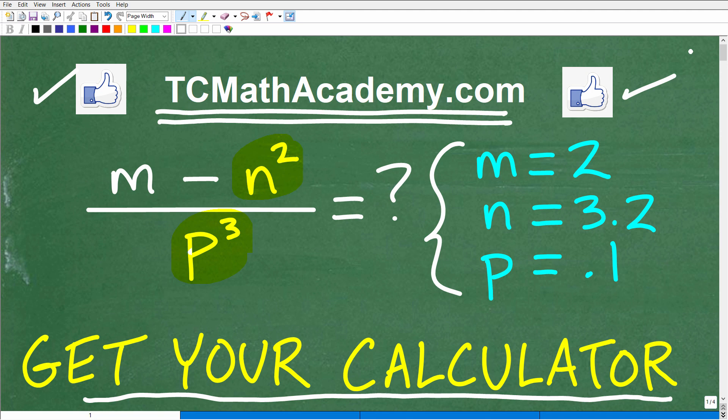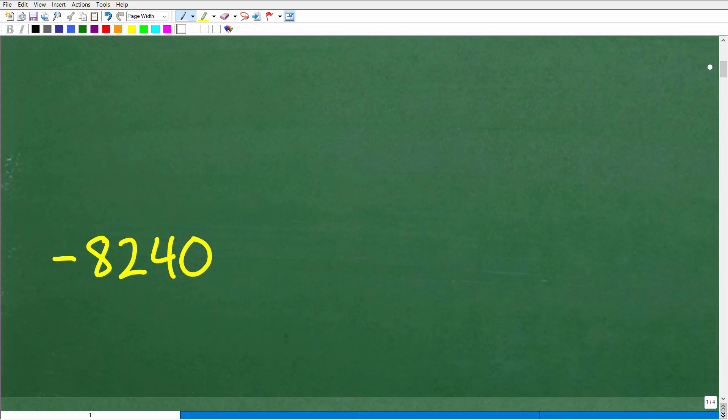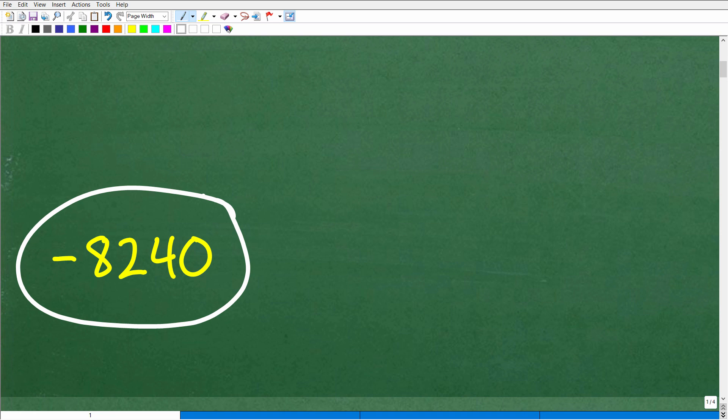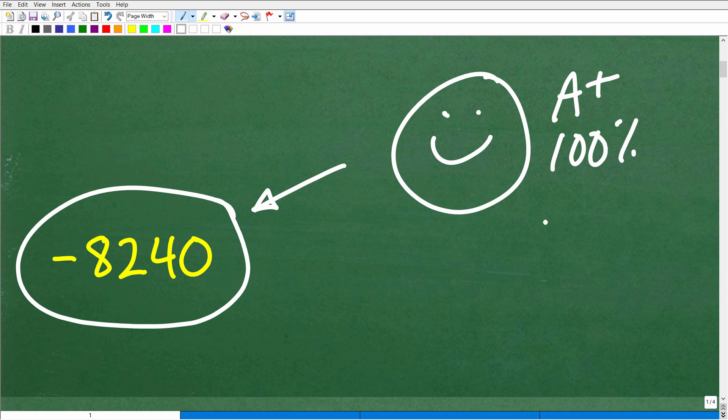So let's go and take a look at the answer here. The directions are to evaluate this expression for these values and if you did this correctly you would get this answer right here: negative 8240. So how'd you do? Well if you got this right that is fantastic. Matter of fact, you definitely earned a nice little happy face and an A plus, 100%, and a few stars. You can tell your friends and family that you know exactly precisely how to evaluate a variable expression, especially using your calculator.